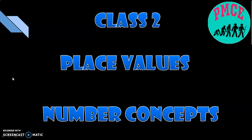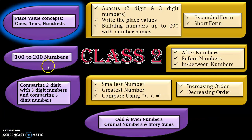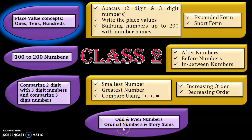Hello viewers, welcome back to my YouTube channel PMCE. In this video we are going to see about place values. In Class 2, under the concept of numbers, the learning outcomes include place value concepts, 100 to 200 numbers, a few activities, comparing numbers, odd and even numbers, and ordinal numbers. We will be dealing only with 100 to 200 numbers.